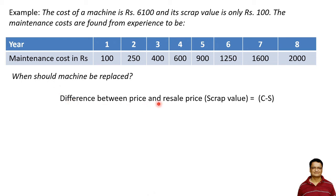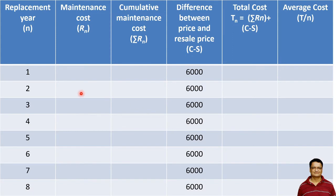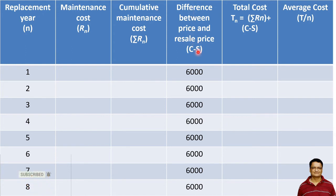The first thing we have to do is find out the difference between the purchase price and resale price — that is the value we are paying for usage of the machine. That is given by 6100 minus the scrap value of 100, giving a cost of 6000 rupees. Now with this cost let us prepare a table. We have eight rows representing each year of usage, a maintenance cost column, a cumulative maintenance cost column, and a column for the difference between price and resale price, which we calculated to be 6000 — constant for all years.